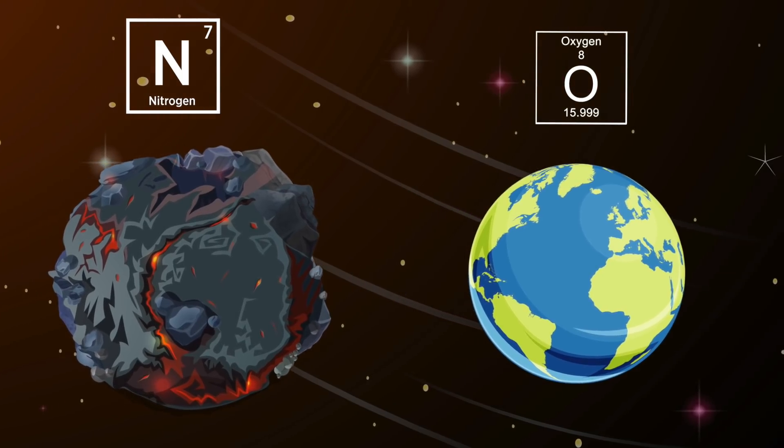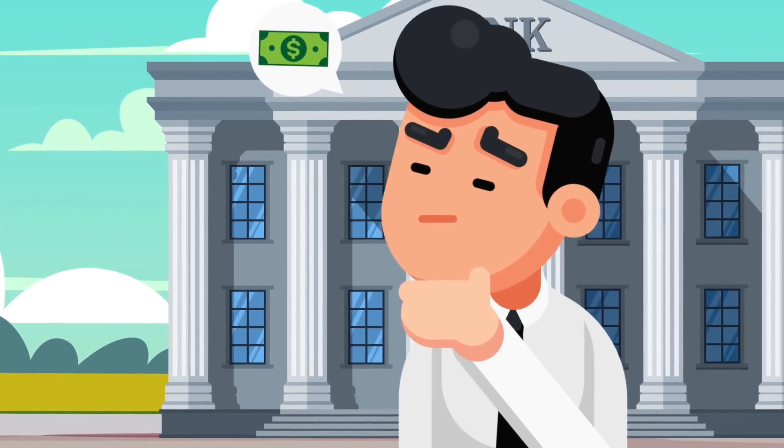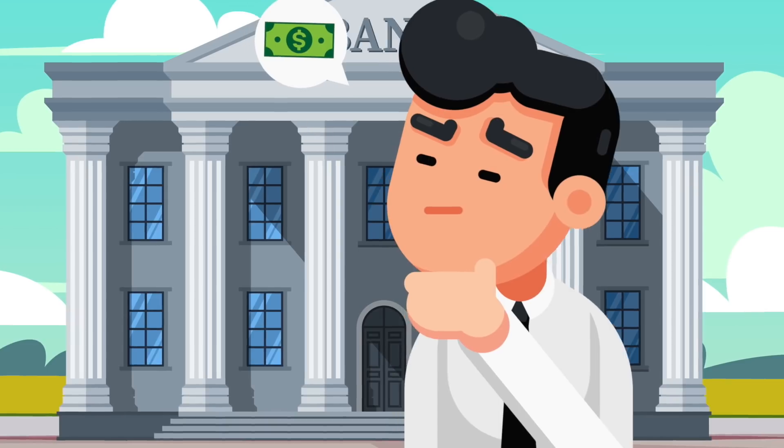However, this planet does have chemicals similar to that of the Earth's atmosphere. These include nitrogen and possibly oxygen. But let's get to the thing we're all thinking about - the money. What exactly is 55 Cancri e worth?